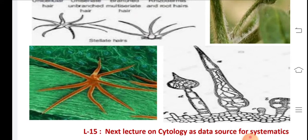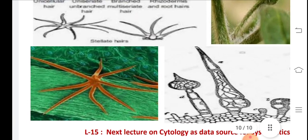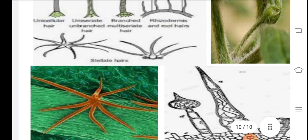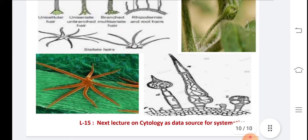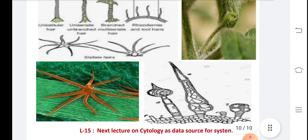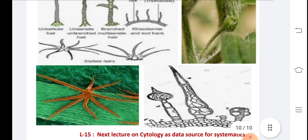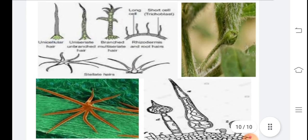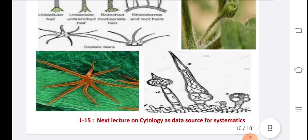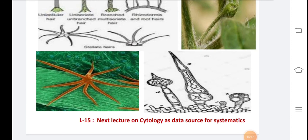To summarize, the role of anatomy as a source of data is very significant. There are many examples across all angiosperm plants — we know there are more than 2.5 lakh angiosperm species, each having different anatomical characters in wood anatomy, epidermal anatomy, and stomata characters. In the next lecture we will see cytology as a data source for systematics. Thank you all, have a nice day.